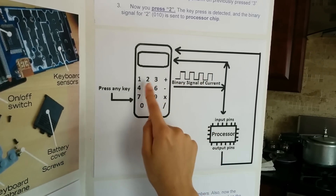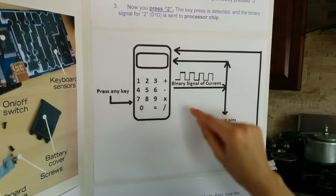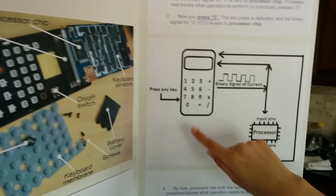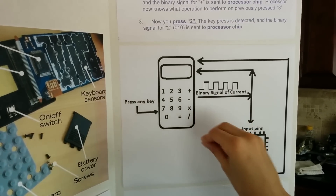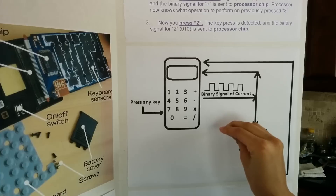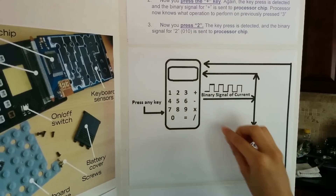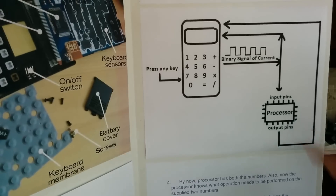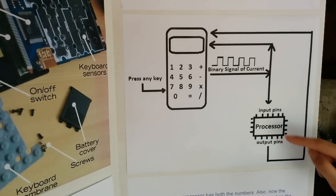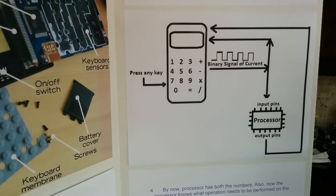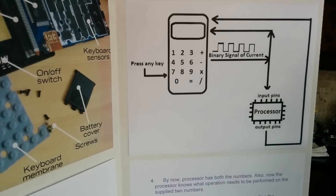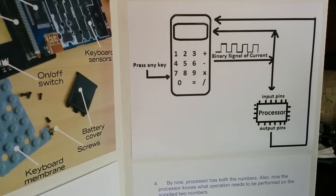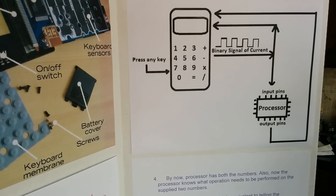And then when you press 2, there's a binary signal for 2 and that's 0010, so it does no current, no current, no current, current, no current — and that gets sent to the processor chip. Now this is when everything starts working. The processor chip uses multiple logic gates — all the logic gates it has to — to perform the operations. So mainly inside the processor chip, the logic gates do the calculations.